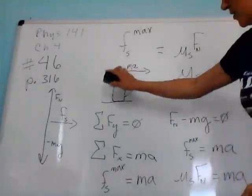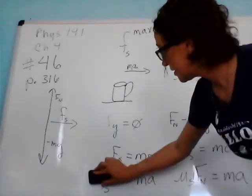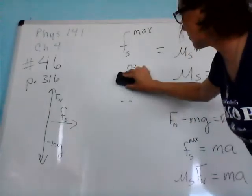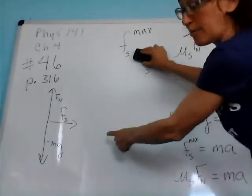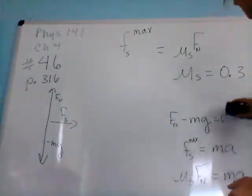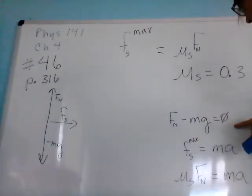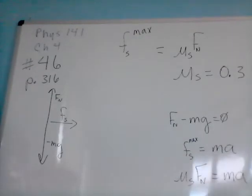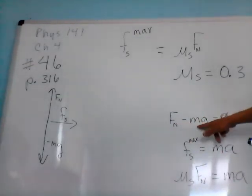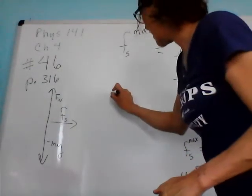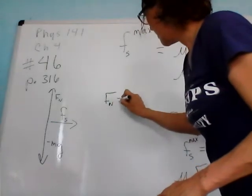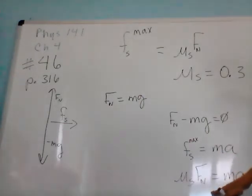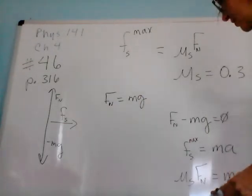I'm going to get rid of some of this so we can keep working. We don't need our coffee cup, really. Got our force diagram right here. I'm going to rewrite this equation to show the equivalency between our normal force and mg. We have Fn equals mg, and then we can take this information and plug it into this equation down here.